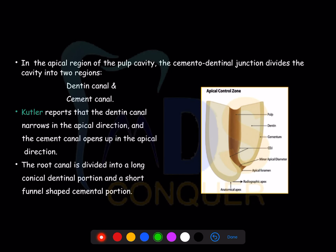There are some minor anatomical modifications not visible to the naked eye but observable with the operating microscope or through sectioning. The cemento-dentinal junction divides the apical area into two areas — the dentinal canal and the cemental canal.